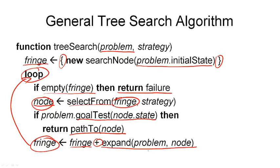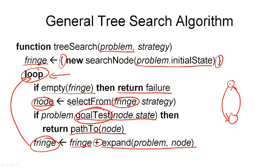We continue until either we've explored the whole graph — meaning the fringe is empty — or a node passes the goal test, in which case our search is done. A key subtlety is that a tree corresponding to a finite search graph may be infinite. For example, with two nodes where you can go from one to the other and back, if neither is a goal node, the search tree will be infinite and the loop may never terminate, even if the search graph is finite.